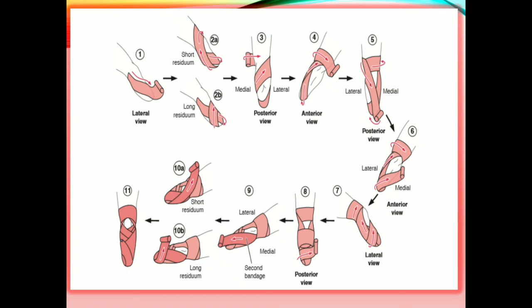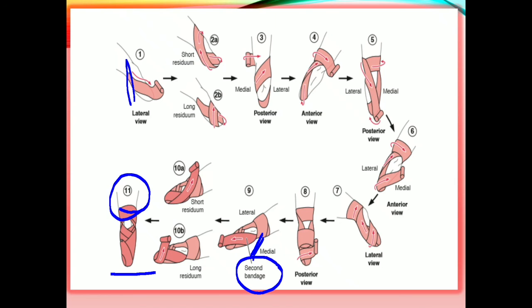After completing the first bandage, we use a new bandage. In diagram nine, you can see the second bandage beginning. The key difference is: if we started the first bandage from the lateral aspect, we must start the second bandage from the medial aspect — specifically from the medial aspect of the medial tibial condyle. Steps 2a and 2b are similar to 10a and 10b. In diagram eleven, the bandaging is complete, with a nice figure-of-eight maintained and each crossing overlapping about half of the previous bandage.